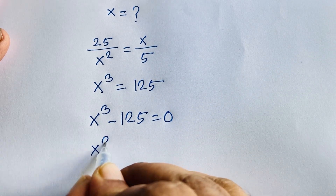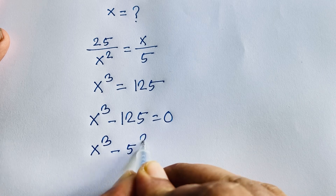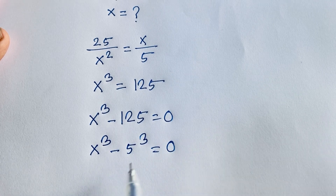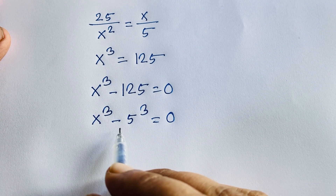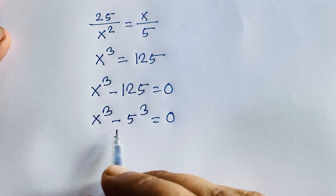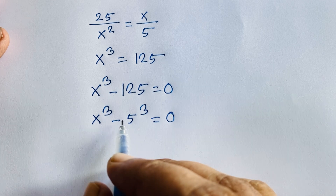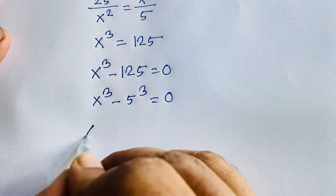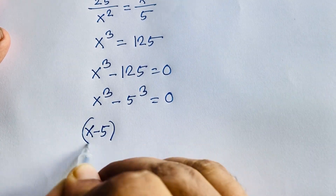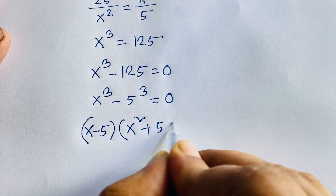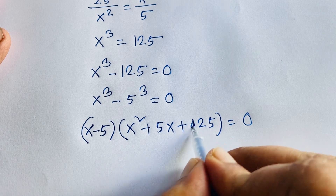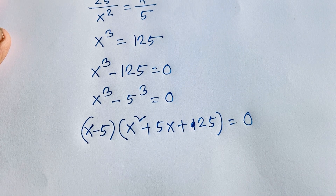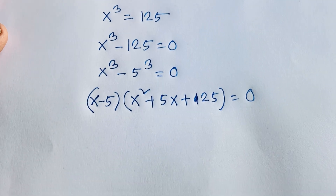This becomes x to the power 3 minus 5 to the power 3 equals 0, since 5³ = 125. Using the difference of cubes formula — a³ minus b³ equals (a minus b)(a² plus ab plus b²) — this expression factors as (x minus 5)(x squared plus 5x plus 25) equals 0.